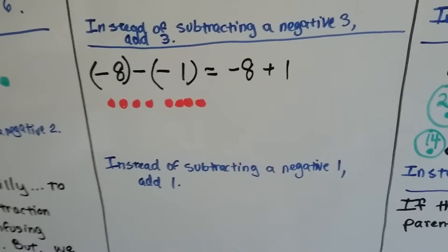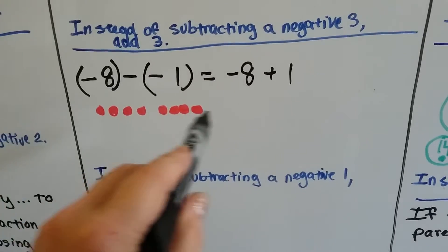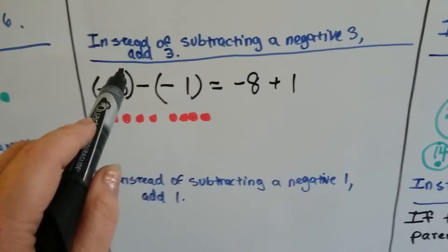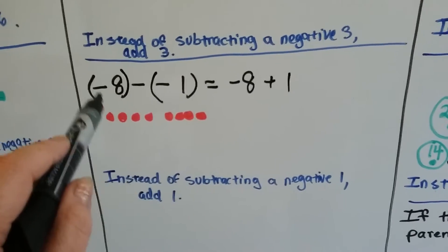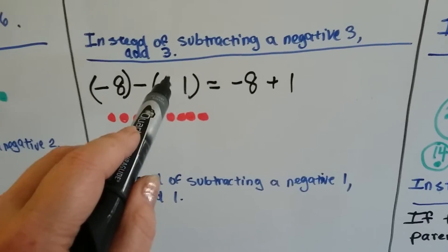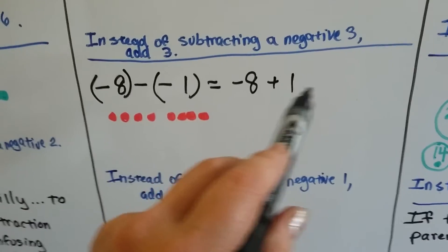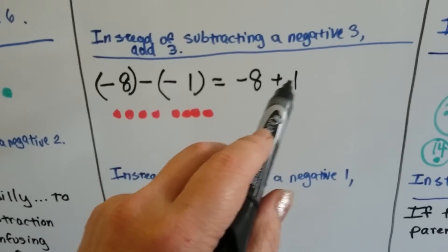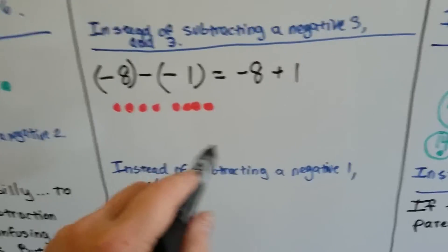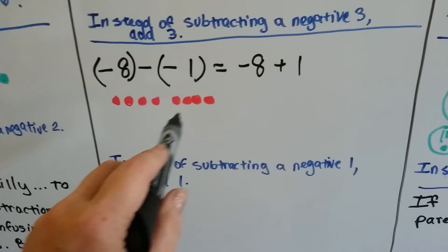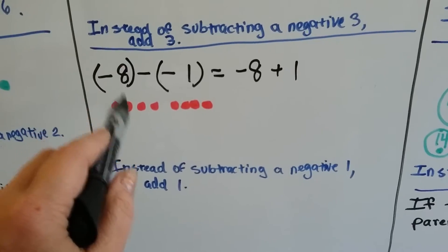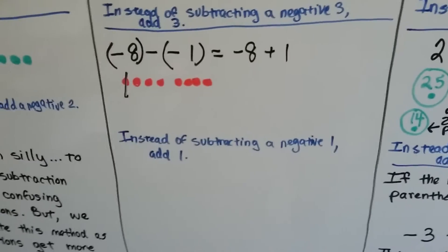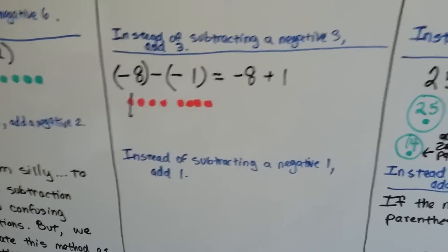Negative 8 minus negative 1. We've got 8 negative chips. Instead of negative 8 minus negative 1, we say negative 8 plus 1 — get rid of the negative and make it a positive. If you were 8 feet underground and added a foot of dirt, you'd now be 7 feet underground. Or if you were $8 in debt and took away a dollar of debt, now you're $7 in debt. So instead of subtracting negative 1, we add 1.